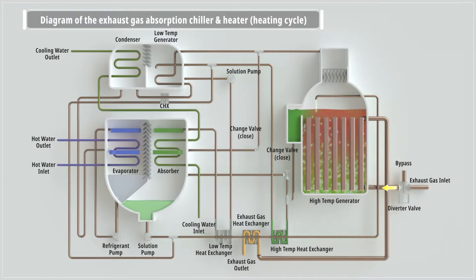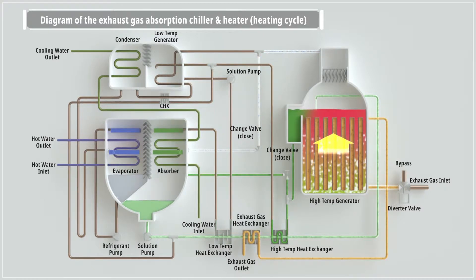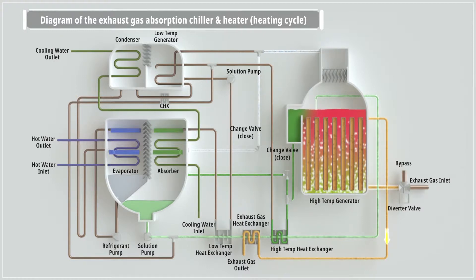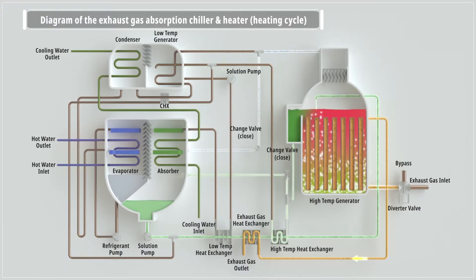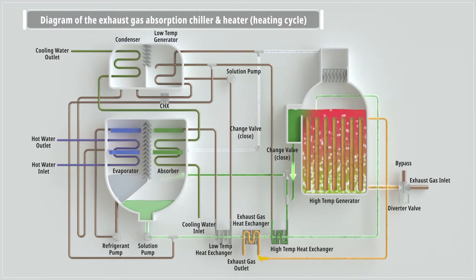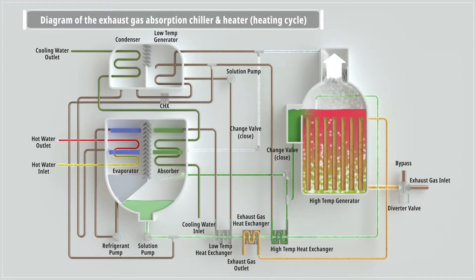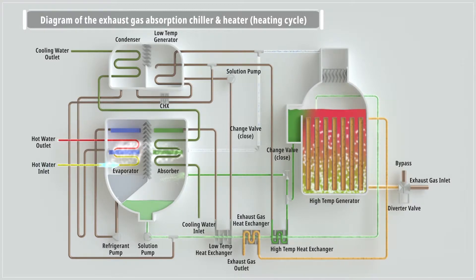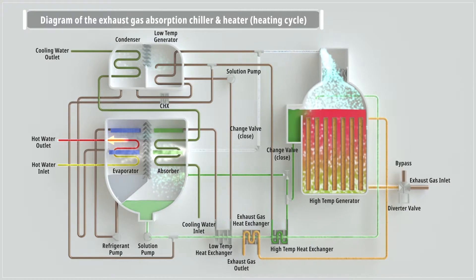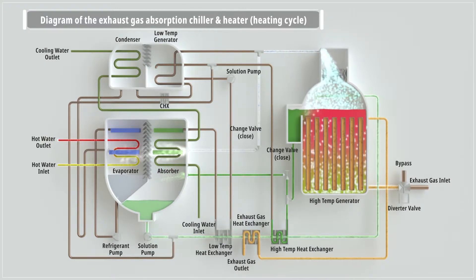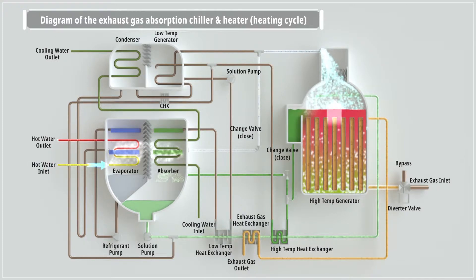CHP system's heating works in simpler logistics. Heated by incoming exhaust gas in the high temperature generator, the solution releases refrigerant into vapor, becoming a concentrated solution which flows to the absorber. High temperature vapor flows to the evaporator, heating up incoming hot water. The vapor, condensed to liquid by releasing heat, is then mixed into the solution in the absorber, flowing back to the high temperature generator and repeating the cycle.